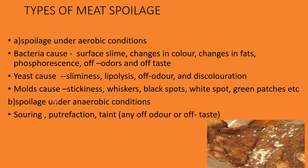Aerobic growth of molds may also cause spoilage — stickiness, whiskeriness, black spots, white spots, green patches, etc. — along with decomposition of fats giving rise to off-odor and off-taste. So these are all the types of spoilage we can observe under aerobic conditions, caused by different organisms: bacteria, yeast, and molds.